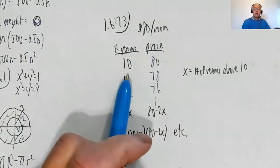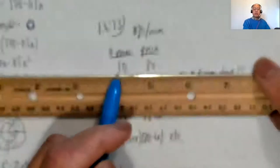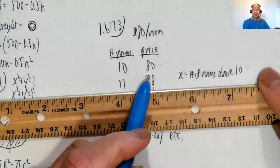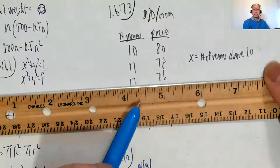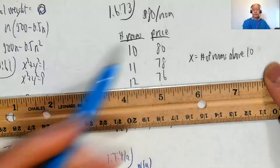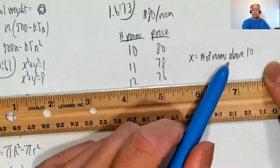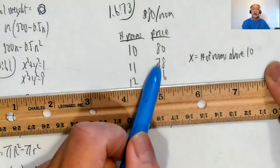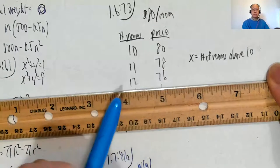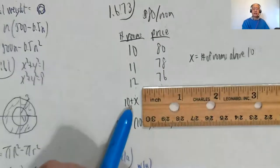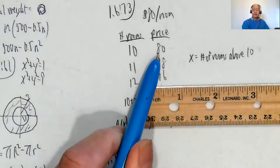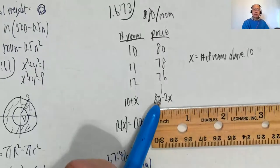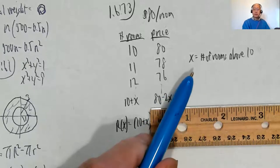So here's the interpretation. I made a little table. It's $80 per room up to 10. So if you take 10 rooms, it's $80 each. But for each additional room beyond 10, the price drops by $2. So 11 rooms would be $78 per room, 12 rooms would be $76 per room, and so on. I let X be the number of rooms above 10, which means every time X goes up by 1, the price goes down by $2. So the price per room is 80 minus 2X.